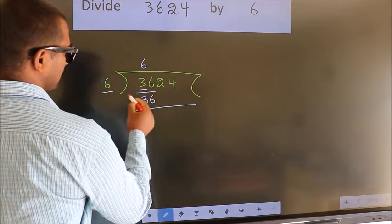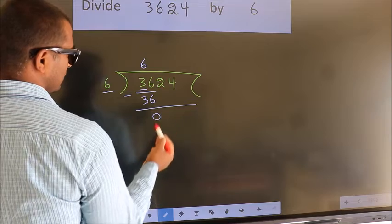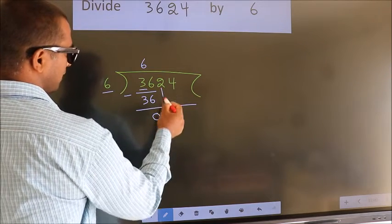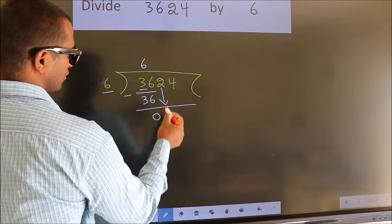Now we should subtract. We get 0. After this, bring down the next number. So, 2 down.